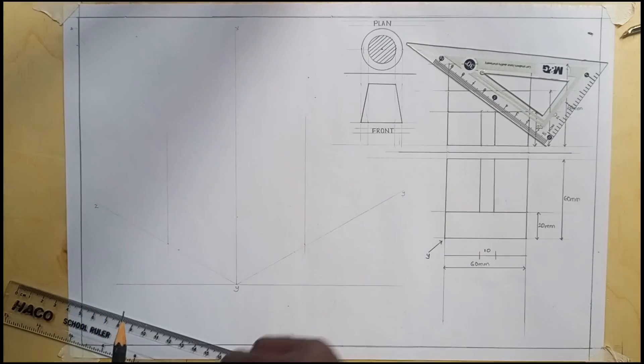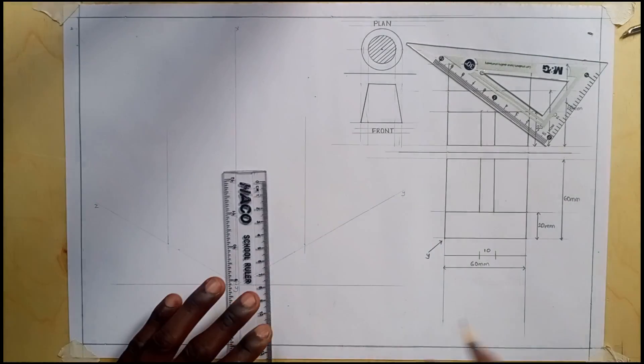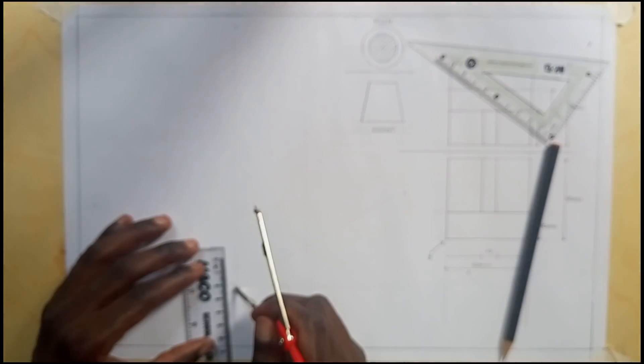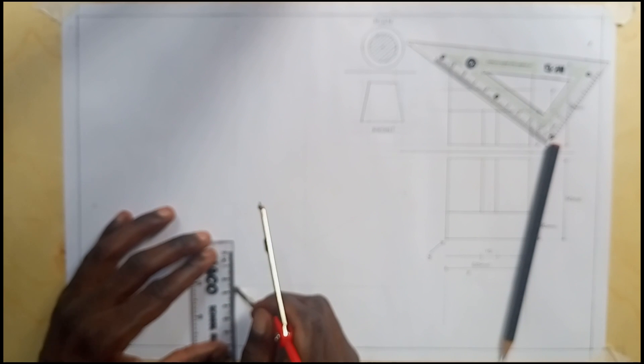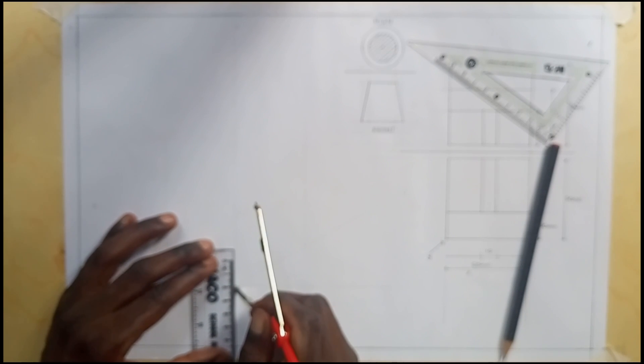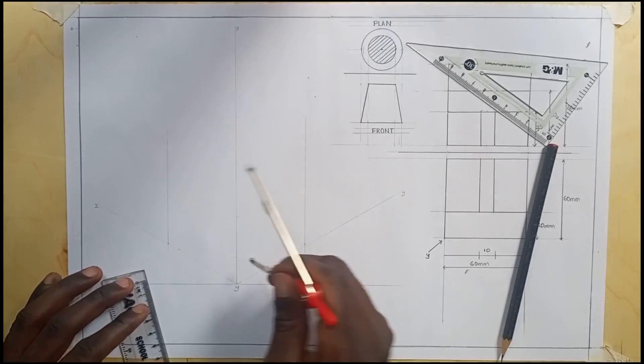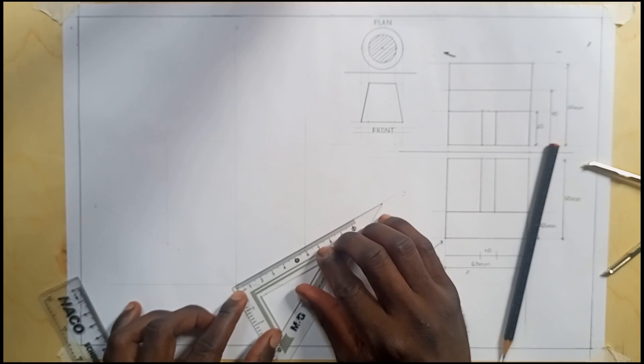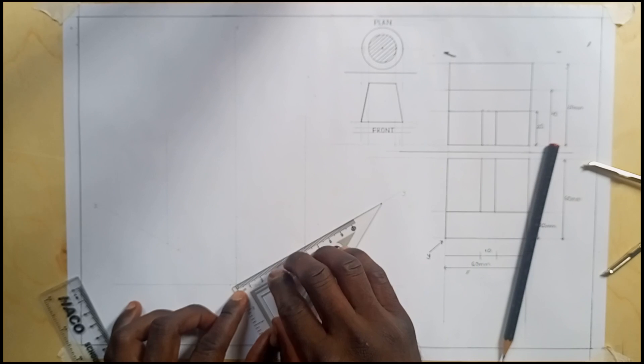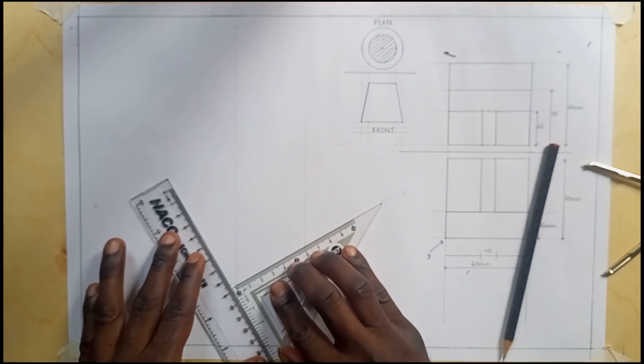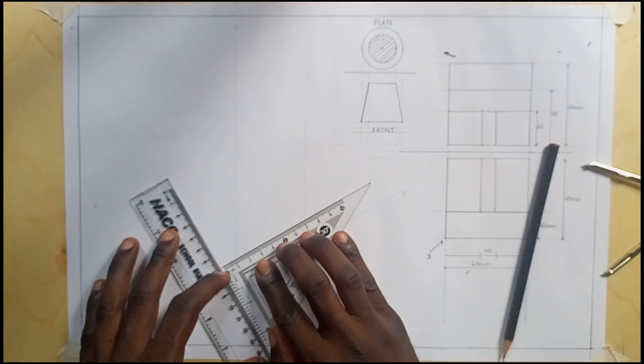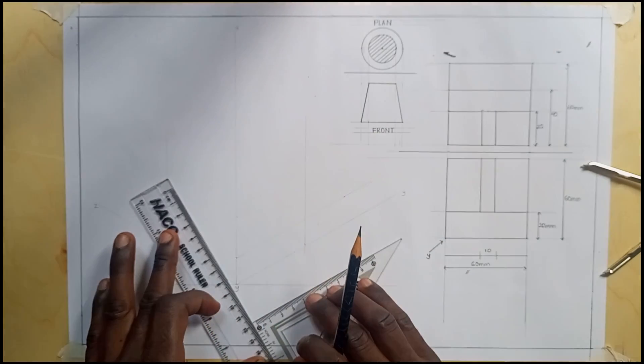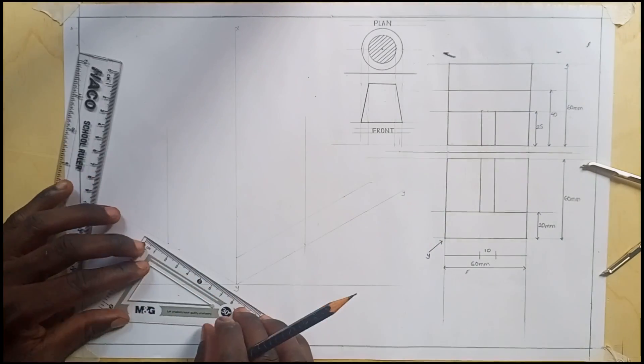Now I'll also measure off 60 to the side. When you're done, we shall measure off 20 millimeters. I use my small set square, I put it against this Y axis, I slide off that Y axis to that point making it parallel, and I also do the same thing.